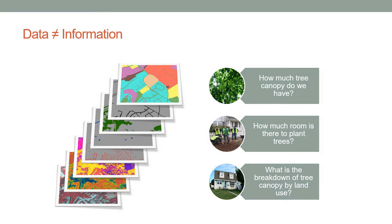Data is not equal to information. You can have stacks of layers of high spatial resolution data that need to be converted into information, which is where the data becomes very useful. You can begin addressing questions like how much tree canopy do we have, how much tree canopy per parcel, how much more tree canopy can we potentially have per parcel, how much impervious surface per parcel. All of that can only be done effectively with high spatial resolution data and object-based image analysis.